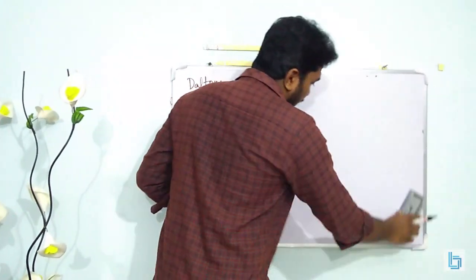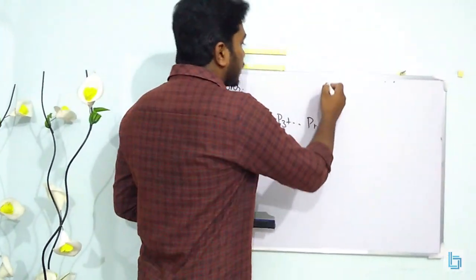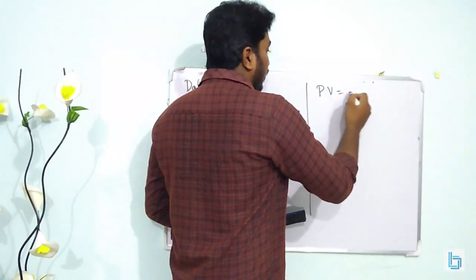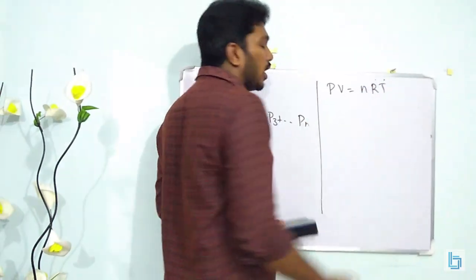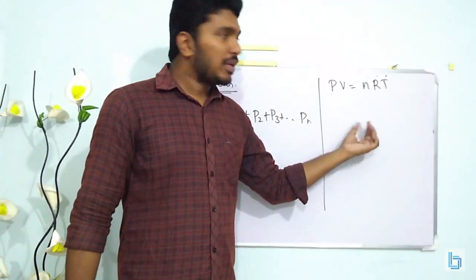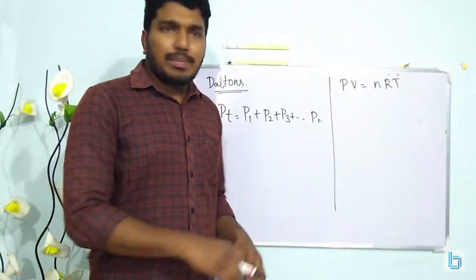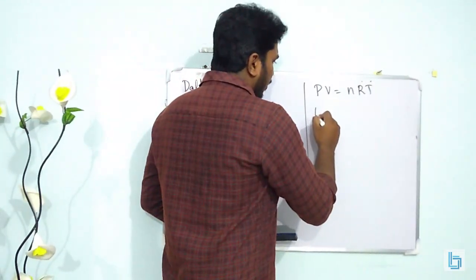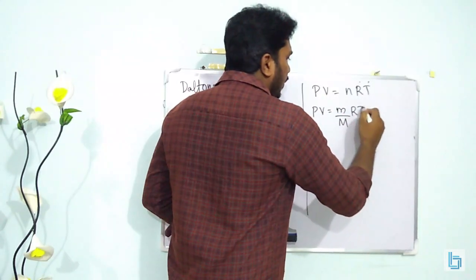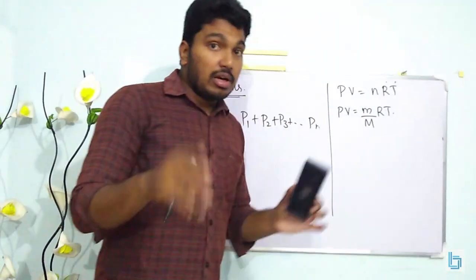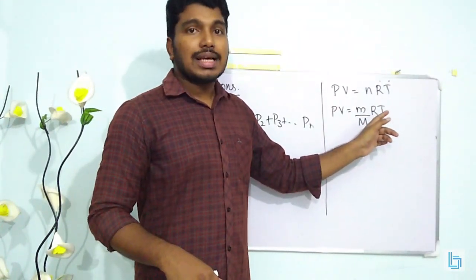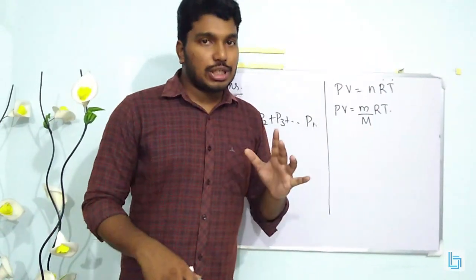Using Boyle's law and Charles' law, we derive the ideal gas equation: PV = nRT. Different forms of this equation include: PV = (m/M)RT, where m is the given mass and M is the molar mass, and R is the universal gas constant, T is the temperature.